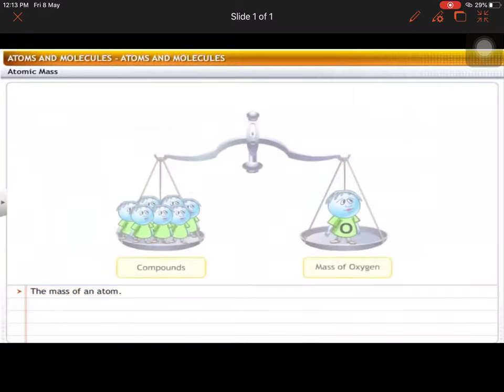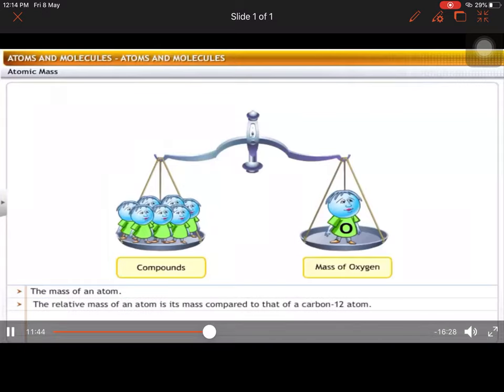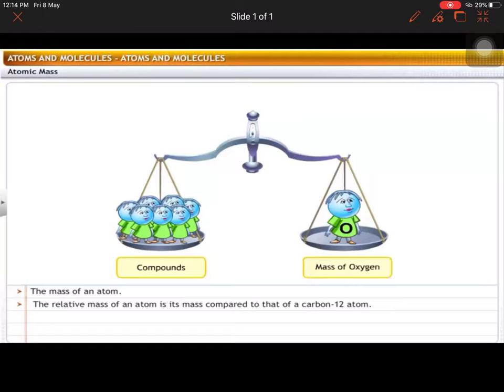As scientists initially took the mass of oxygen as standard mass since oxygen formed a large number of compounds. In 1961, carbon 12 isotope was chosen as the standard reference for measuring atomic masses. So for all atomic masses, for every element, carbon is chosen as the standard one. Every atomic mass can be standardized with carbon 12 atom. The relative atomic masses of all elements have been found with respect to an atom of carbon 12.